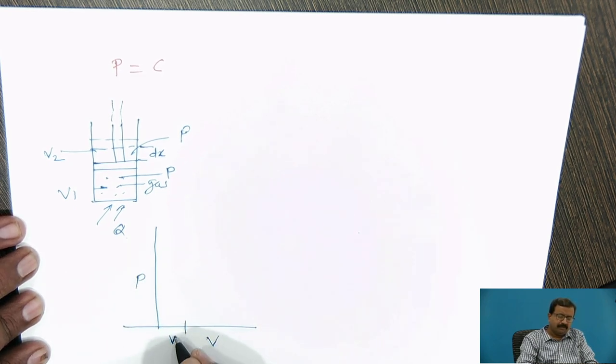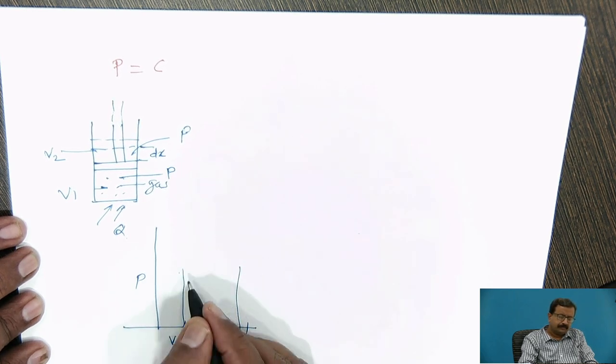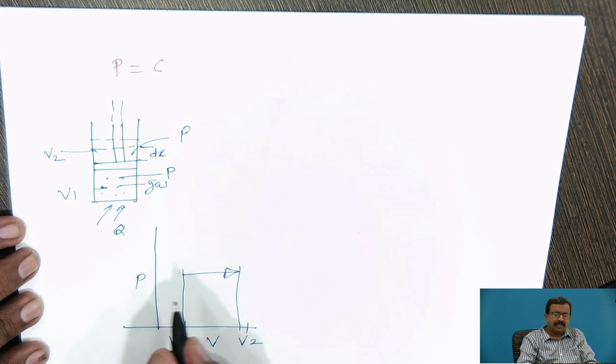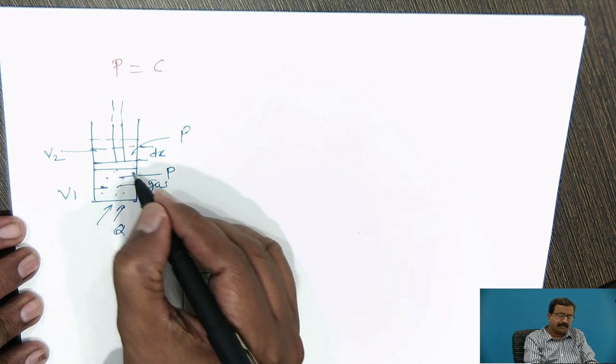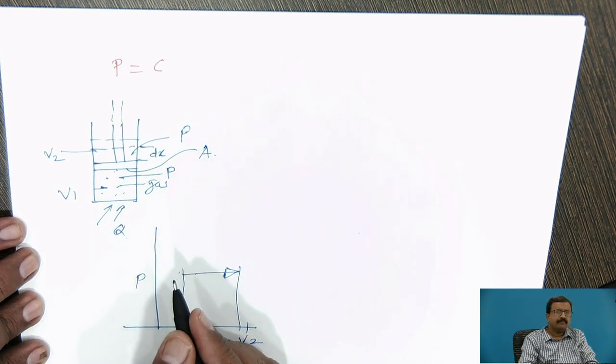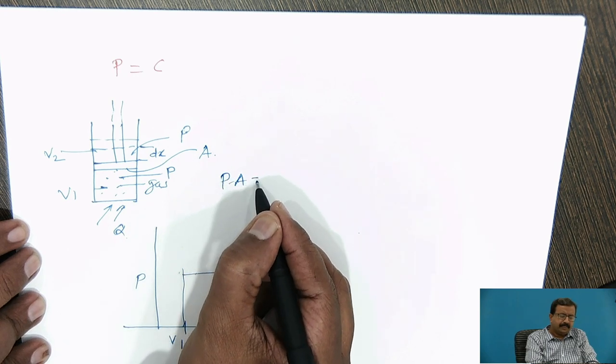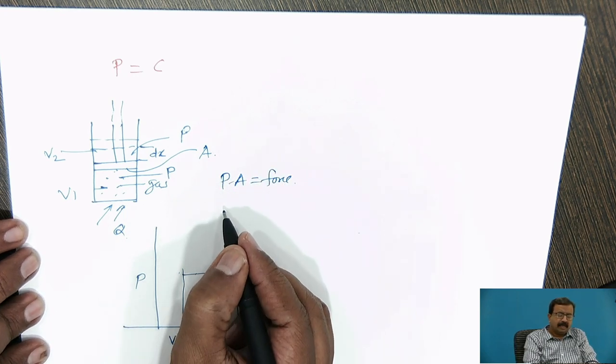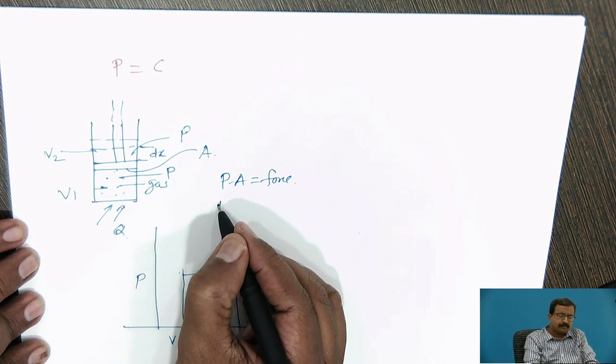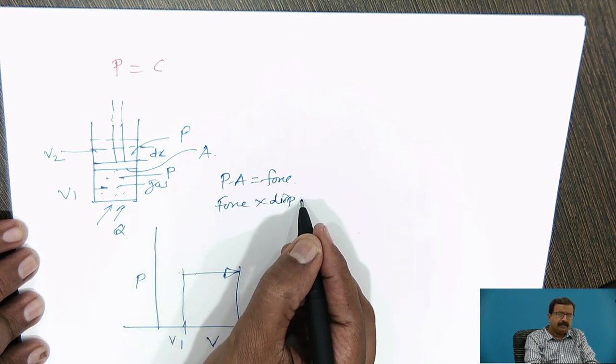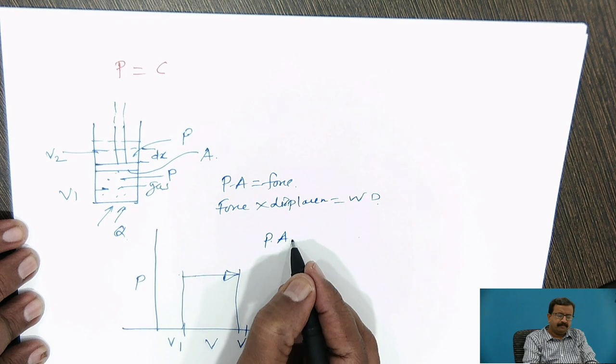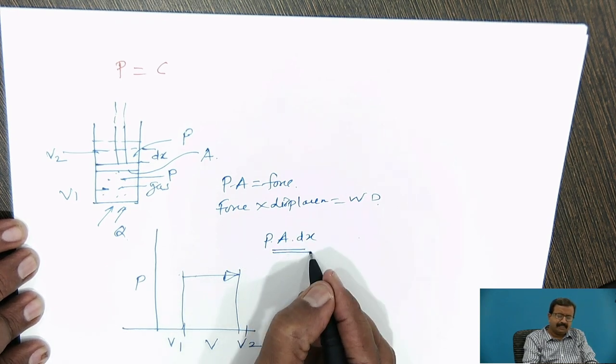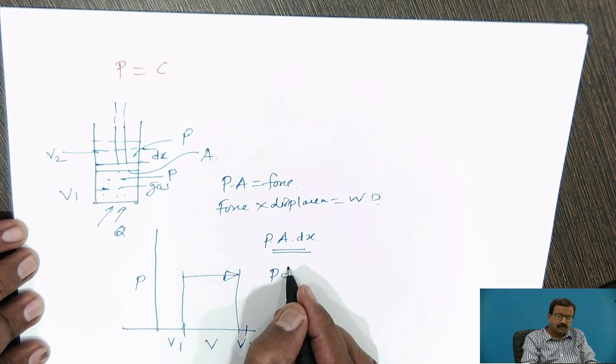But what has happened to volume? Here volume is v1 and at the end it is volume v2. So if I want to draw this on a process diagram, that is pressure and volume, initially my volume is v1, finally my volume is v2 and my pressure is constant. So naturally from this, if I see the net force applied on this piston, suppose the piston has got cross sectional area A and p into A equals force.